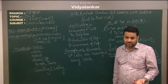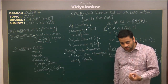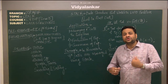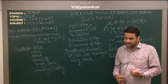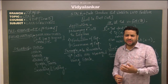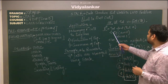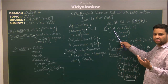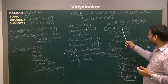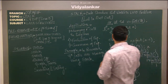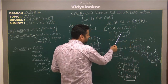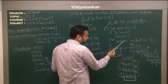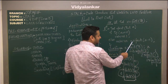As we know, recursion is a process where a function repeatedly calls itself within its own body until a certain condition is met. Here is a small example — we have a fact function that takes an integer value n. If the value of n is 0, it returns 1; otherwise it returns n into fact of n minus 1.